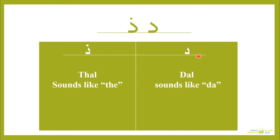The Dal and the Dhal are written like this. We start from the top, go back and then go forward on the line, and they sit on the line. They look like two thirds of a triangle. The Dhal is the same, but it has a dot on top.